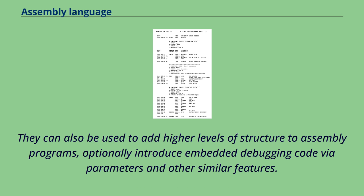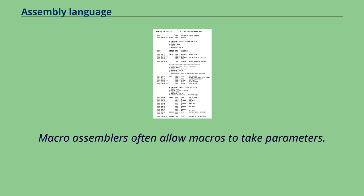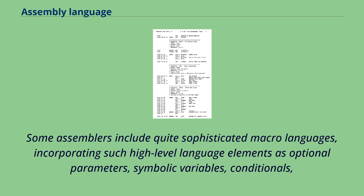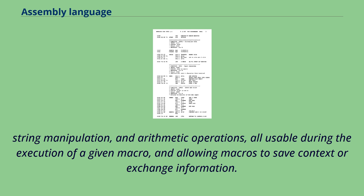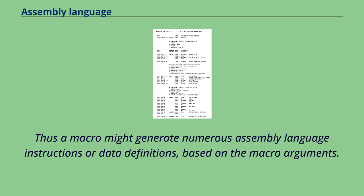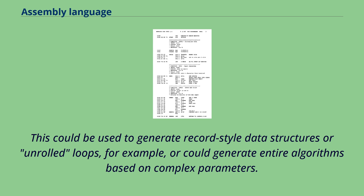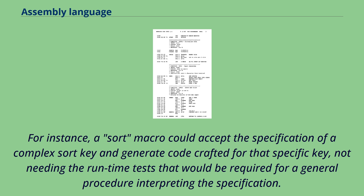Macros can also be used to add higher levels of structure to assembly programs, optionally introducing embedded debugging code via parameters and other similar features. Macro assemblers often allow macros to take parameters. Some assemblers include quite sophisticated macro languages, incorporating high-level language elements as optional parameters, symbolic variables, conditionals, string manipulation, and arithmetic operations, all usable during the execution of a given macro, and allowing macros to save context or exchange information. Thus a macro might generate numerous assembly language instructions or data definitions based on the macro arguments. This could be used to generate record-style data structures or unrolled loops, or could generate entire algorithms based on complex parameters. For instance, a sort macro could accept the specification of a complex sort key and generate code crafted for that specific key, not needing the runtime tests required for a general procedure interpreting the specification.